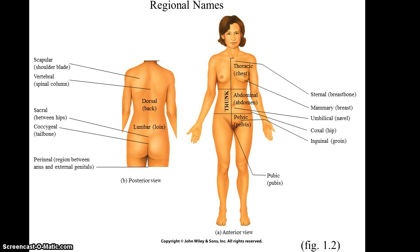On the posterior view, you have the scapular region, the vertebral region for the entire spinal cord, the sacral region which is the region between the hips, the coccygeal region or the tailbone, and also the perineal region which is the space between the anus and the external genitalia.